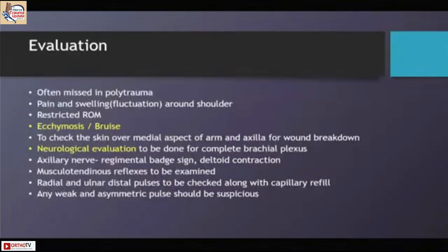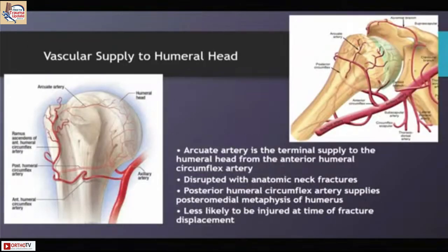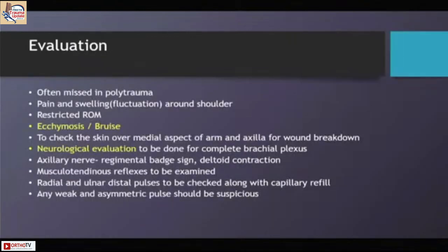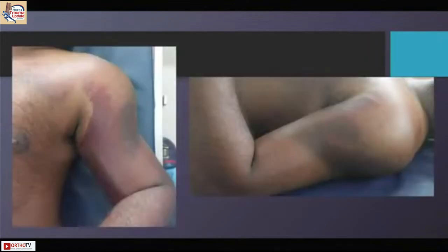The posterior circumflex artery, which supplies the posteromedial calcar and the metaphysis, always dictates AVN risk. The dislocation particularly brings the vessel precariously close to the shaft, especially in neglected cases. Because the injury is severe, the signs and symptoms are far more profound and the ecchymosis and bruising are very prominent.